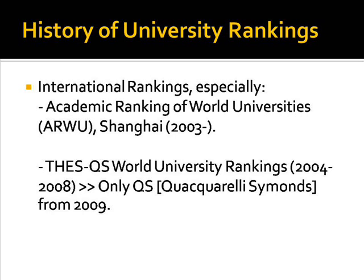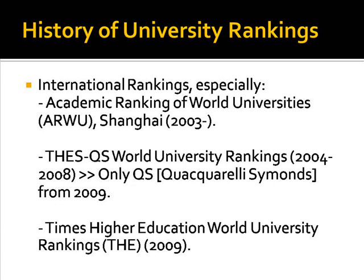The second system of World University Rankings to appear came out in 2004, initially as a joint venture between the British Times Higher Education Supplement and Quacquarelli Symonds, an educational advisory company, but now continued by QS alone, and so commonly referred to as the QS Ranking. Various other systems have subsequently been devised, notably a new ranking developed by the now-renamed periodical Times Higher Education, in cooperation with the information company Thomson Reuters from 2009 onwards. This represented a formal split between the THE and QS, following disagreements over methodology, with the QS Ranking retaining the original system. The THE has also started to publish a separate set of World Reputation Rankings from 2011 onwards.